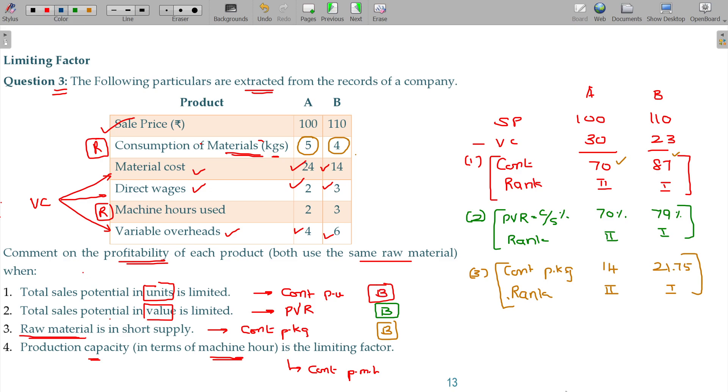The last case, case 4: when machine hours are the limiting factor, we have to find contribution per machine hour. We need 2 hours for manufacturing each A, and each A gives 70 rupees, so per hour I'm getting 35 rupees. For B, I need 3 hours to manufacture one unit which gives 87 rupees, so I get only 29 per hour.